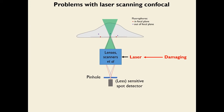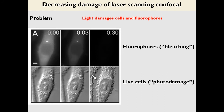Lasers can be very damaging — light damages both cells and fluorophores. This is illustrated by images showing progressive fluorophore bleaching and cell damage (blebbing on cell surfaces, called photodamage) with increasing light exposure. The confocal's concentrated laser spot makes this worse. There is no avoiding this fundamental problem.